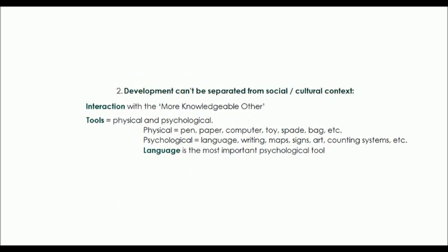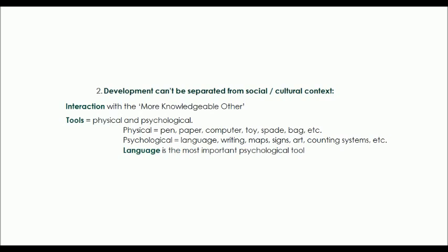The second principle is that development can't be separated from social and cultural context. Vygotsky focused on interaction and the tools — both physical and psychological — that were used in relationships with the environment. Interaction was with the more knowledgeable other, which is any person with a better understanding or higher ability in any subject than the learner, for example teachers, other students, or even a computer. According to Vygotsky, social interaction leads to continuous changes in thought and behavior, so you're always learning from your environment.